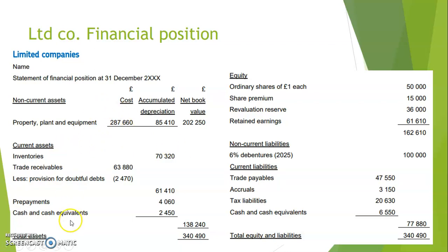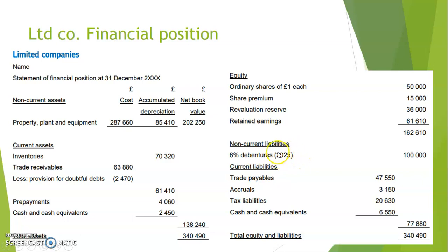So NCA, current assets, total assets — then you have equity, which is your capital. That includes ordinary shares (or share capital), share premium, revaluation reserve, and retained earnings. The first three are always positive; retained earnings can be negative, for example if there are losses. Then you have non-current liabilities — debentures or loans typically come in here, with the redemption date shown. Then current liabilities as you'd expect.